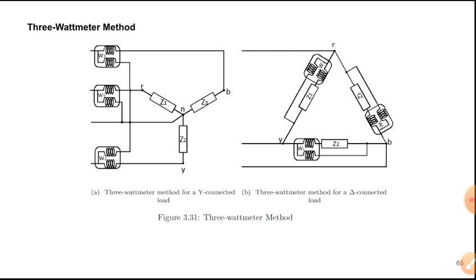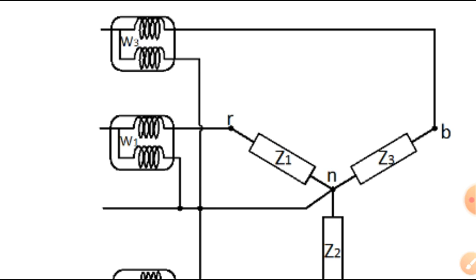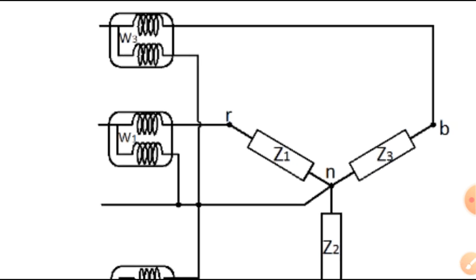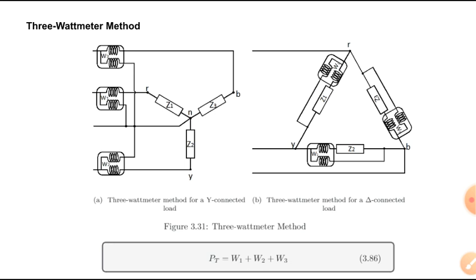For the 3-wattmeter method, we use 3 wattmeters — one at each phase of the three-phase system. In Y connection (letter A) and delta connection (letter B), we have W1, W2, and W3 connected at each phase. Observe the connection: the current coil is always in series with the path of the current, while the voltage coil is in parallel with the phase voltage of the load. The total power is W1 + W2 + W3.